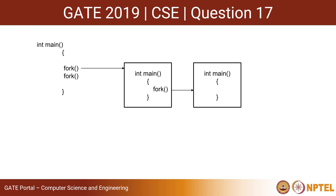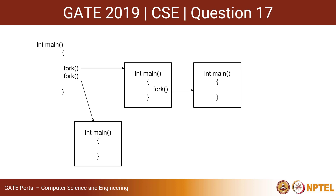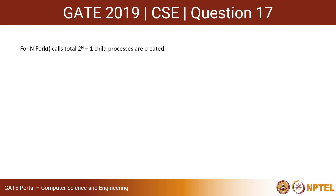Now remember there is one more fork call in the parent process. This fork call will create another child process, and after that fork call in the parent process there are no other fork calls. So in total there will be three child processes created by this small code. For two fork calls there are three child processes, so if there are n fork calls then there will be 2 to the power n minus 1 child processes being created.